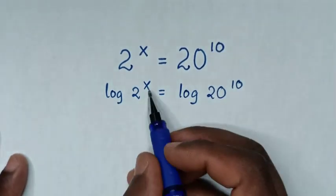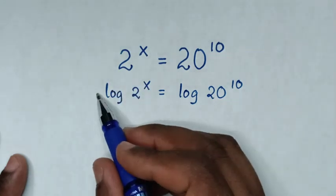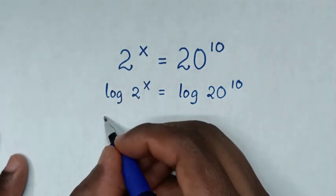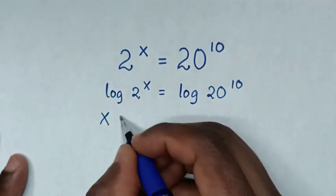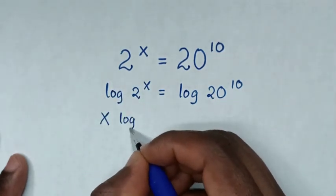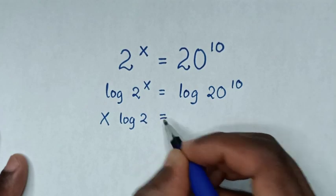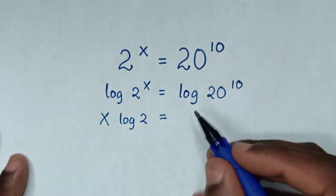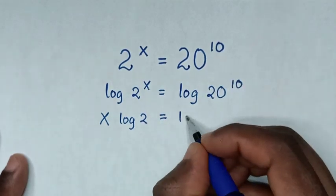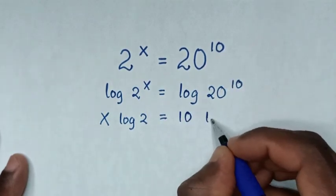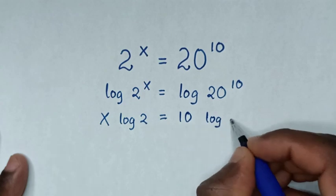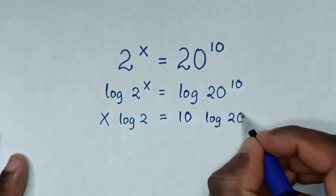Then this power of x will move to the base, so it will be x log of 2 is equal to. This power of 10 will also move to the base, so it will be 10 log of 20.